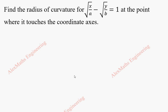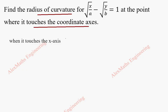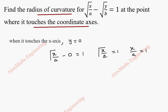Hi students, this is Alex. In this video we are going to find the radius of curvature for the given curve at the point where it touches the coordinate axis. First we find those points. When it touches the x-axis, the value of y is 0. Substituting 0, we get root of x by a equal to 1. Squaring both sides gives x by a equal to 1, so x equals a.